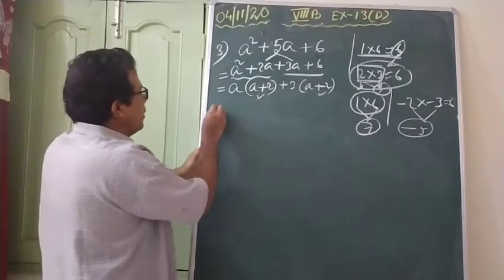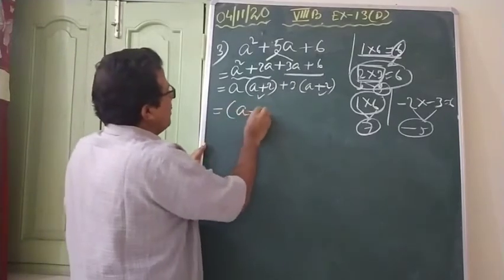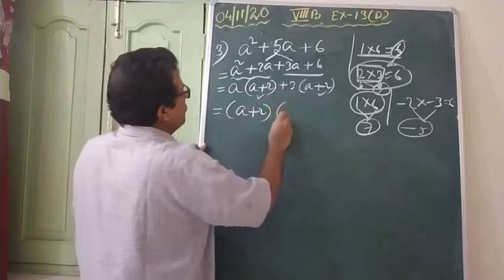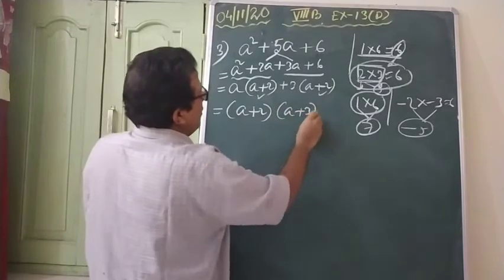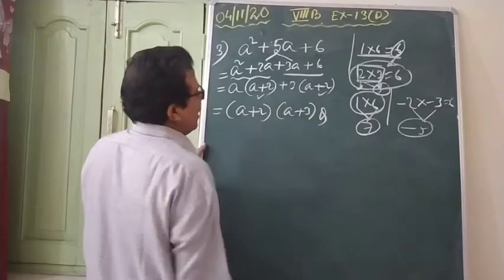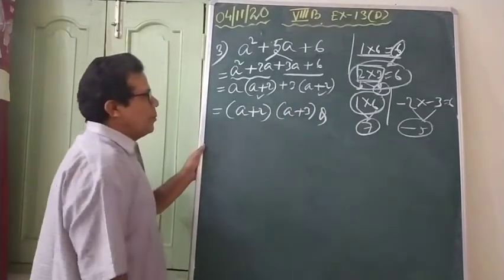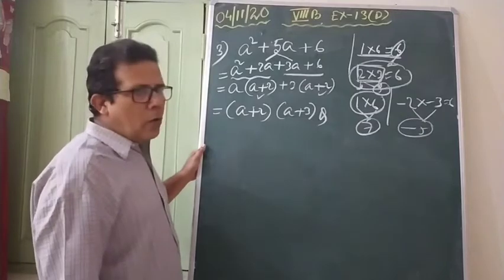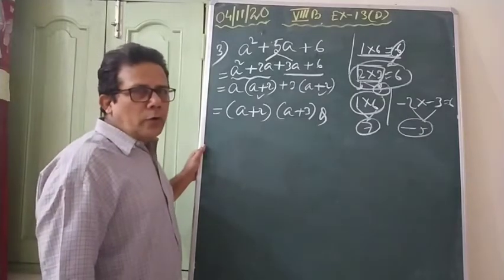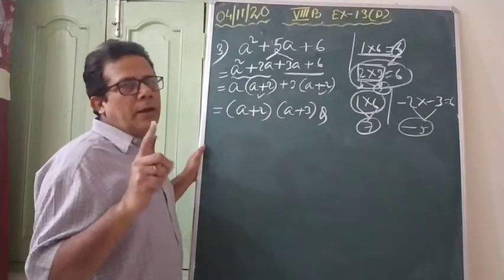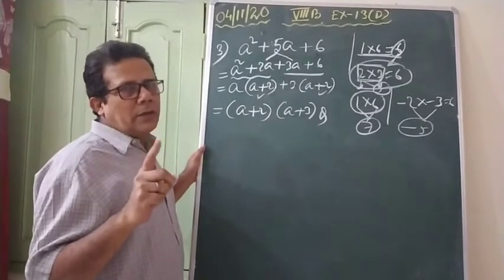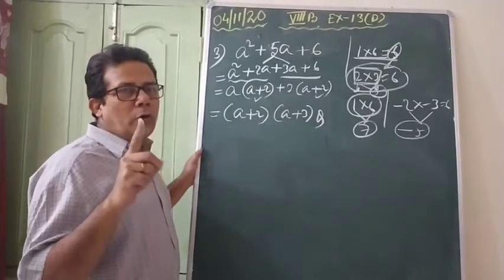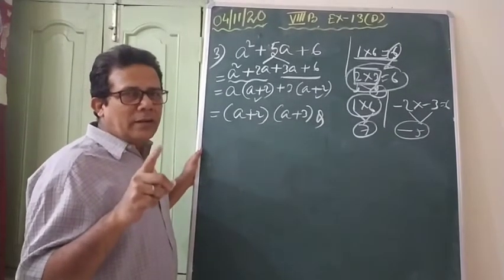So if both bracket terms are same, write them one time, remember that. And what is outside, write them one more time. That is how you are supposed to write the answer. I am going to solve one more problem in today's class, then I will give you some homework. Those you have to do on your own — you have to practice.